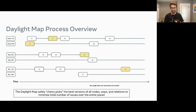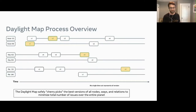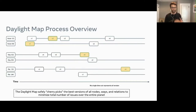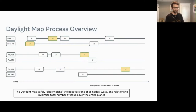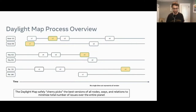Daylight essentially gets rid of the notion of taking a single time cut. What we can do is sort of cherry-pick the best version of all the nodes, ways, and relations, and minimize the total number of issues over the entire planet. When I use the word 'safely,' I mean things like referential integrity — you're not going to have a way referencing nodes that no longer exist, and we're not going to end up with things in weird states where the road network is broken because we weren't careful about which versions we're essentially plucking or cherry-picking.